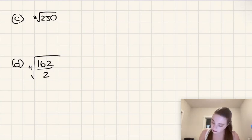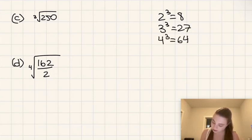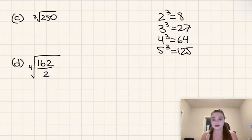So what are the perfect cubes? Well, 2 cubed is 8. That's a perfect cube. 3 cubed is 27. That's a perfect cube. 4 cubed is 64. That's a perfect cube. And 5 cubed is 125. That is a perfect cube. And looks like we have a winner there because 125 times 2 is 250. So there we go. That means 125 certainly is a factor of 250.